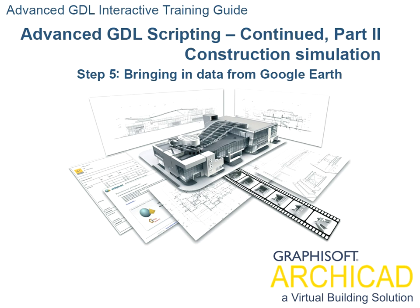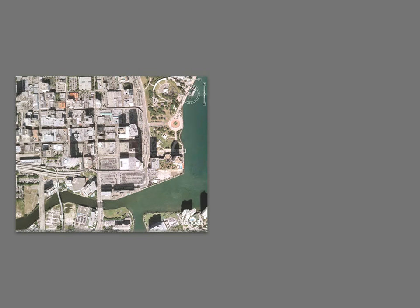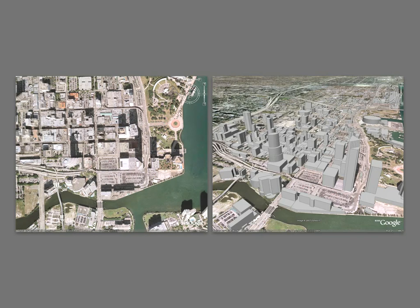Step 5: Bringing in data from Google Earth. We will bring two images from Google Earth: the image of a map of a portion of a city, and the image of a 3D view of the same portion with a modeled 3D building in it.